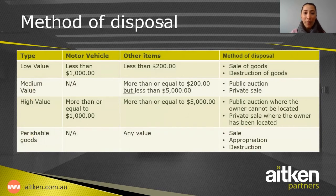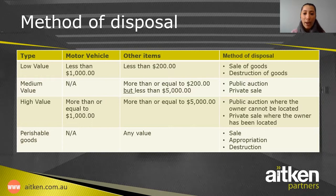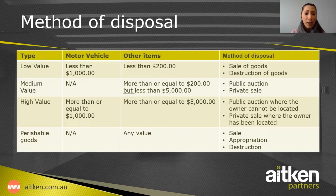A table covers the method of disposal. For low-value items — a motor vehicle less than $1,000 or other items less than $200 — the OC can dispose of the goods by sale or destruction. For a medium-value item not including a motor vehicle, equal to $200 but less than $5,000, the OC can dispose by private auction or private sale. For high-value motor vehicles more than or equal to $1,000 or other items more than or equal to $5,000, the OC can dispose by public auction where the owner cannot be located, or private sale where the owner has been located.